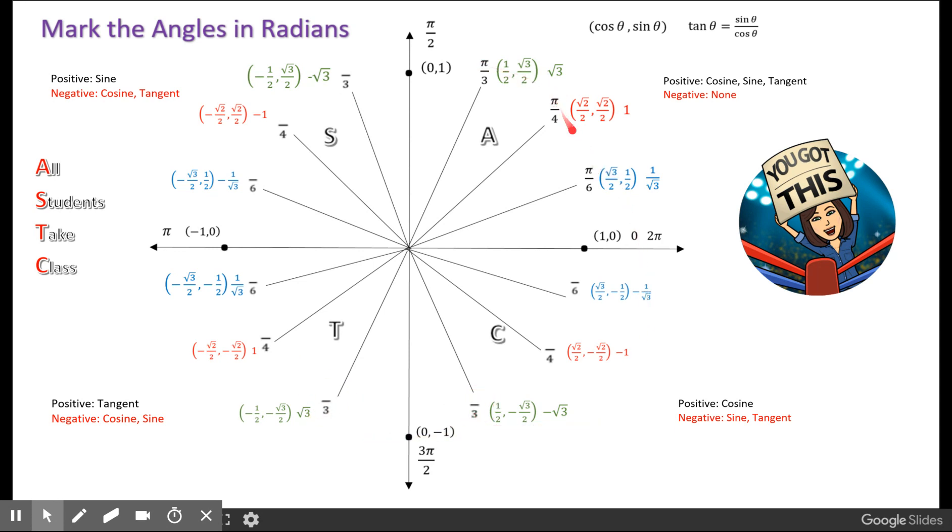In the first quadrant, we just have one pi in the numerator, and we're going to have pi in all the numerators, by the way. But the number that goes in the numerator in the second quadrant is going to be exactly one less than the denominator. So here we have 2 pi over 3, 3 pi over 4, and 5 pi over 6.